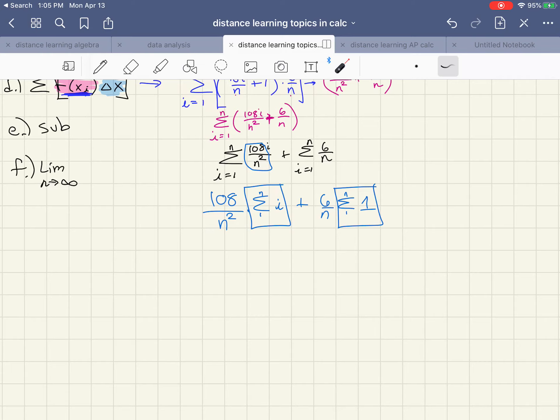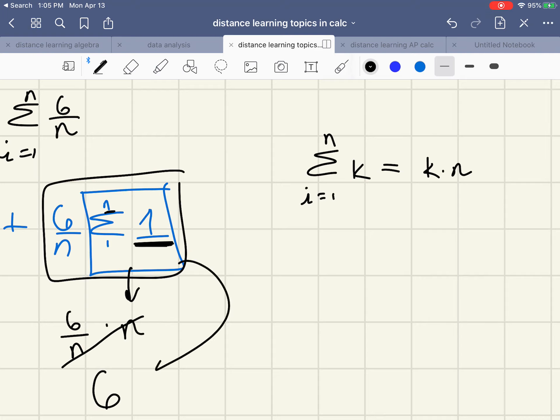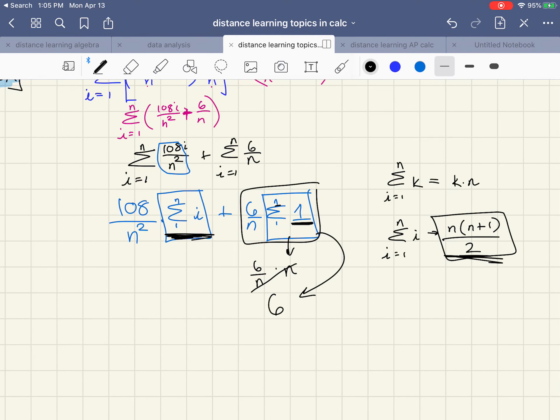We get to substitute. So hopefully you can remember the formulas, if not we only need two so I can take some time and just write them. From one to n when you have a constant it is that constant times n, so over here we have a constant one times n, this whole piece is just n. And when I multiply the six over n times the n, the n's cancel and this whole piece is equal to six. If I have to replace sigma i it's n times n plus one all over two.